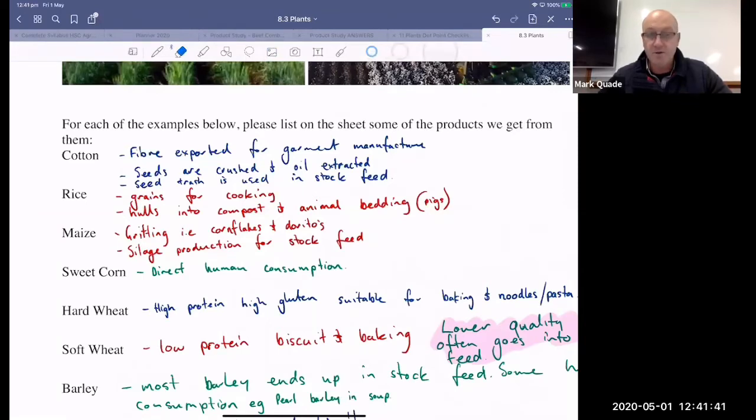So cotton, it produces a fiber, obviously. Within that fiber, though, are a heap of seeds. Those seeds are extracted in a cotton gin, which is a rough processing plant. That gin produces a bale of cotton, which then gets exported into the garment market. So all your cotton clothing, all of that kind of stuff. Those seeds, they can be crushed and oil extracted. So a lot of it is used in fast food for deep fry. And then cotton seed trash can end up into stock feed as well. So feedlots use it. It's really high in energy. So it makes great stock feed.